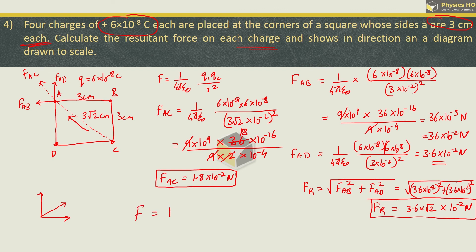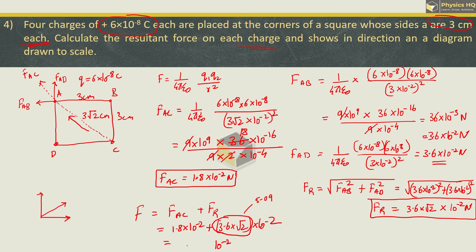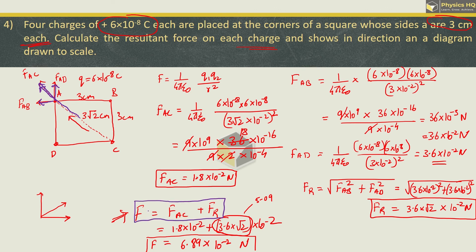The overall resultant force is the force due to charge at C plus the resultant of the first two forces: 1.8×10⁻² plus 3.6√2×10⁻². Taking 10⁻² common, 3.6×√2 calculates to 5.09, and adding 1.8 gives 6.89×10⁻² Newton. We added them directly because the resultant of F_AB and F_AD points exactly along the diagonal AC direction, so all three contributions are collinear.